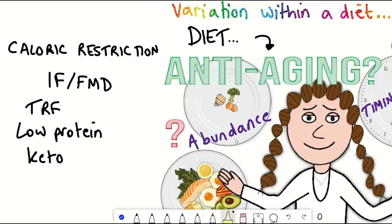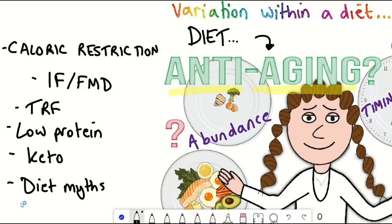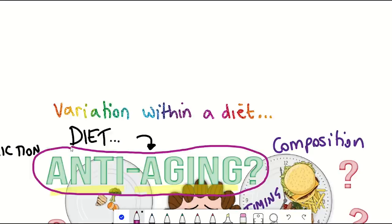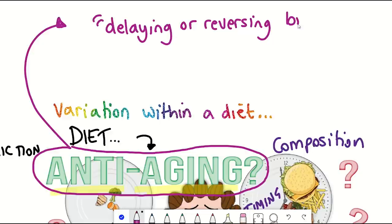And then we'll look at what is it about these diets that have led them to being described as anti-aging, what's the evidence and what are the remaining questions. And as well, I will include some common misconceptions about diets, so you'll want to hang around until then. So just a little terminology first before we start. What exactly do we mean by anti-aging here? Well here we're referring to anti-aging as delaying or reversing biological aging by targeting established molecular mechanisms of aging.